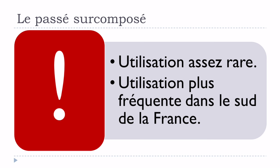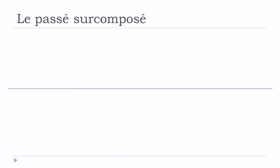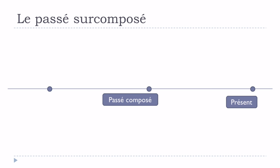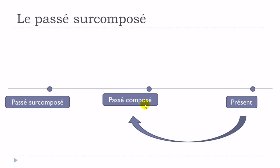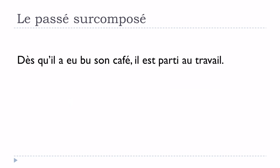Let's see the timeline. This is the present — now. Then we want to express something in the past, so we use le passé composé. And if we want to express something that happened even before that passé composé event, we use le passé surcomposé. So: le présent, then le passé composé, and even before, le passé surcomposé.